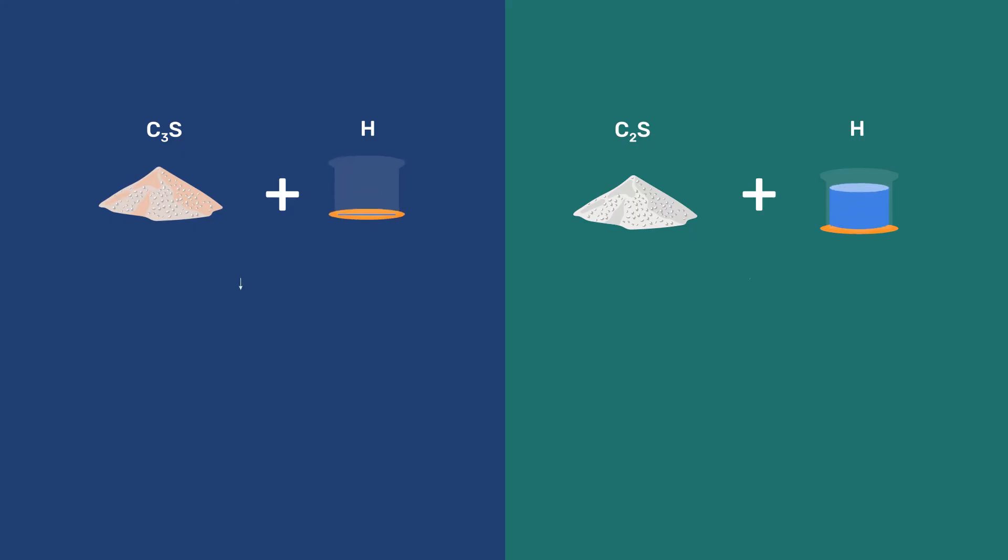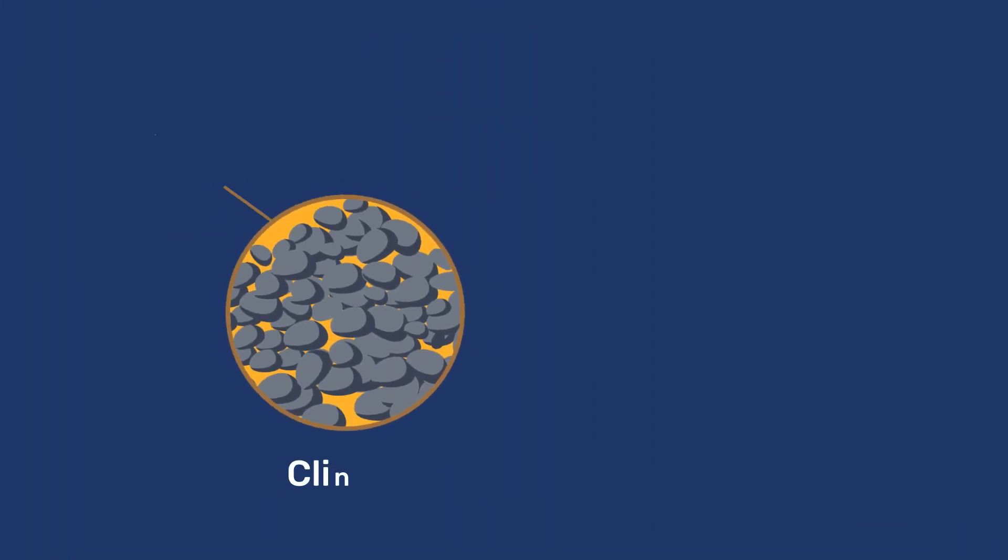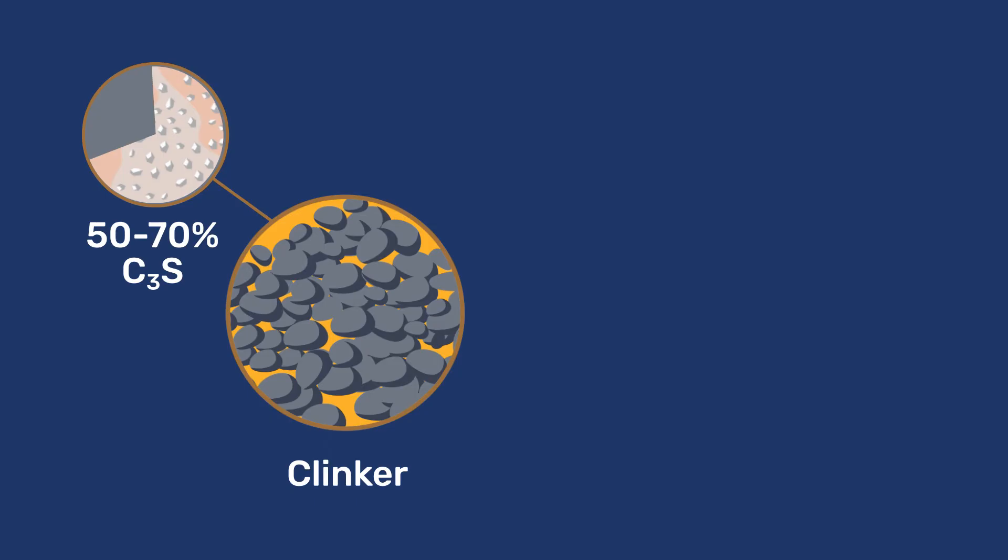As mentioned for natural cements, the hydration reaction of C2S is very slow, on the order of months. The reaction of C3S is much faster, on the order of hours to days. So Portland cement aims for high amounts of C3S, between 50 and 70% of the clinker mass, with then much lower amounts of C2S.